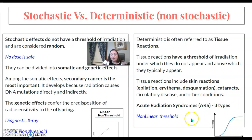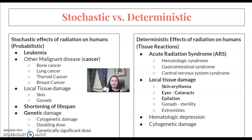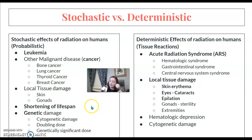There are also the three types of acute radiation syndromes under deterministic. For stochastic effects — sometimes also called probabilistic — the main example is leukemia, but it could be other cancers: bone cancer, lung, thyroid, breast cancer. There can also be some local tissue damage, shortening of lifespan, and genetic damage.